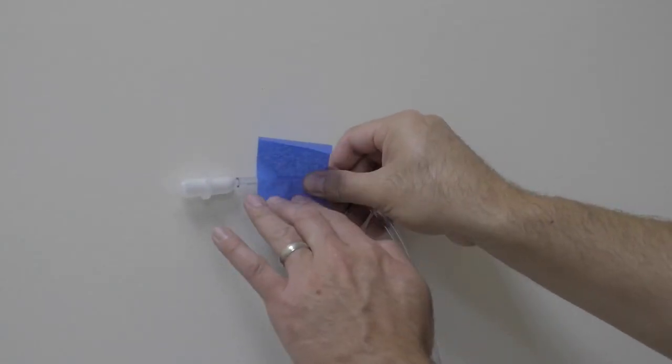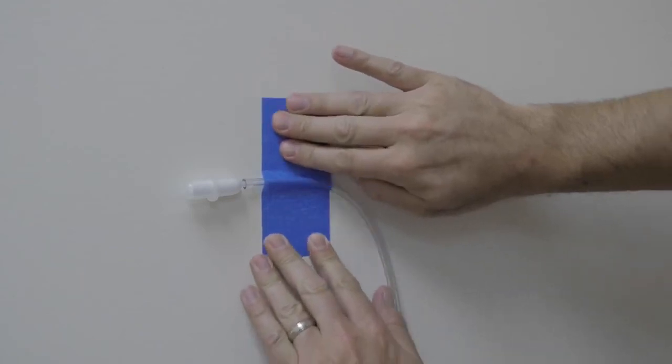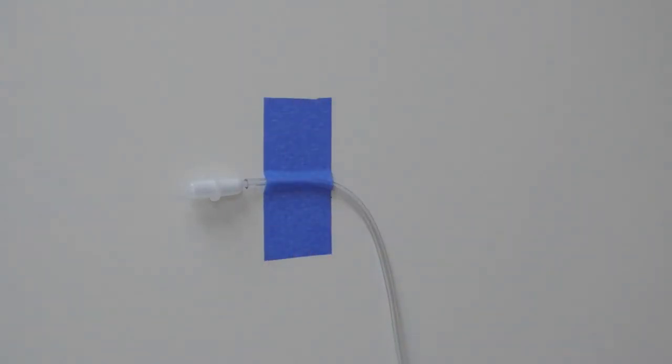We do not recommend simply leaving the end of the tubing on the ground. You can simply tape the end of the tube to the wall to avoid these kinds of problems.